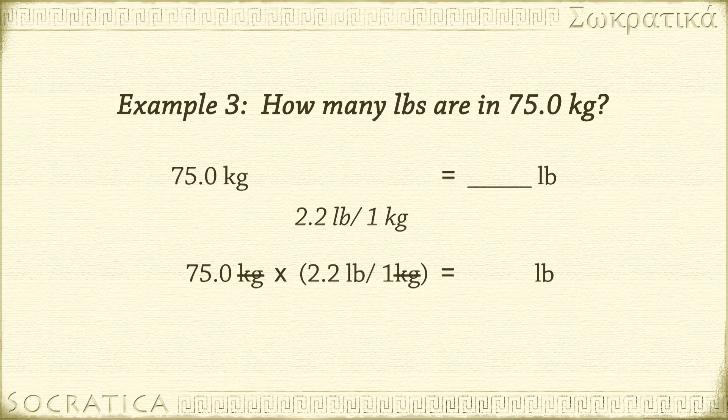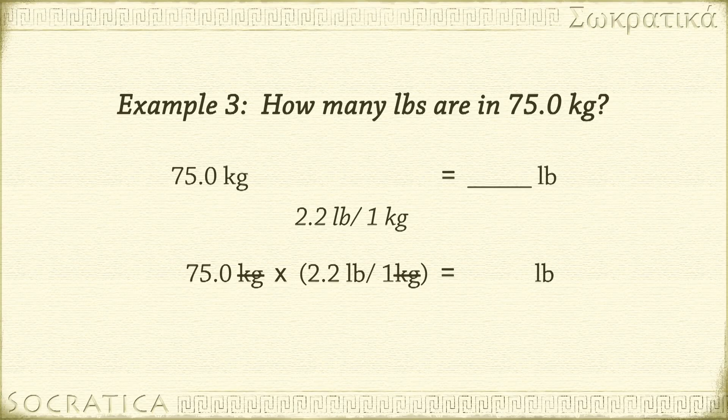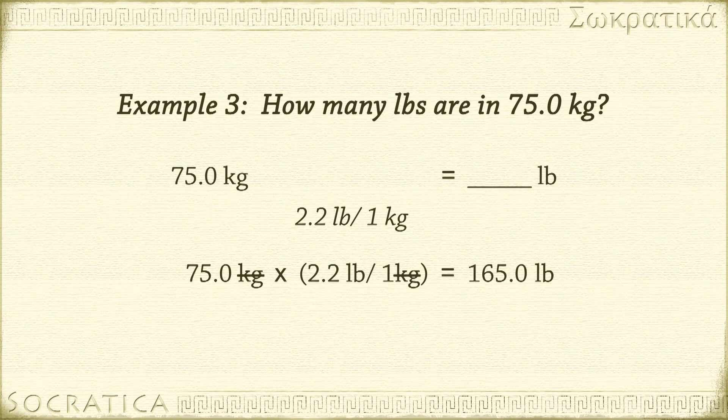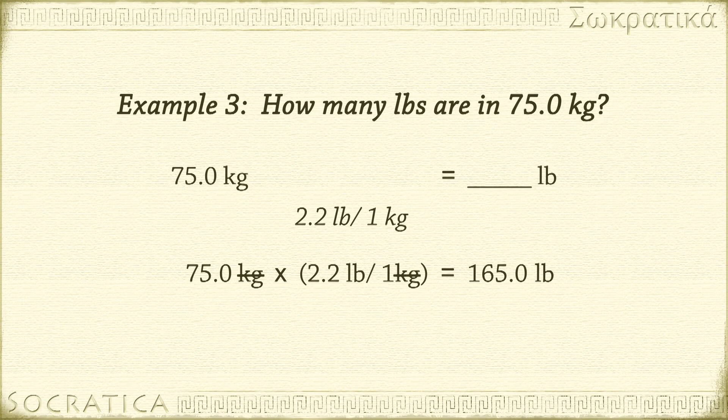Multiply across the top and bottom. 75.0 times 2.2 equals 165.0 pounds. Make sure you write in the units. Don't forget to check for the number of significant figures. We had 3 significant figures in 75.0, so we can write 3 significant figures in our final answer.